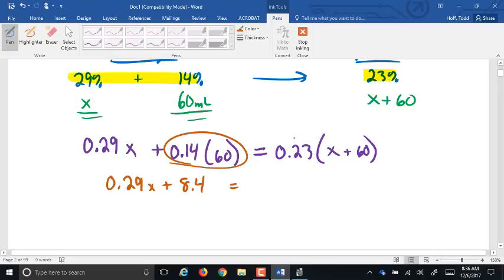Then we have, on the right side, we have the parentheses. We're going to have to distribute. So 0.23 times X, 0.23X. 0.23 times 60 is 13.8.